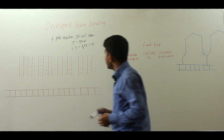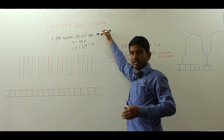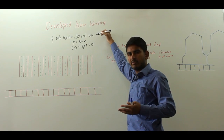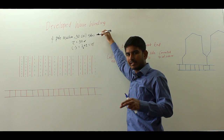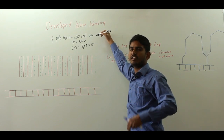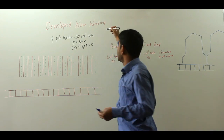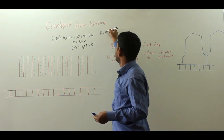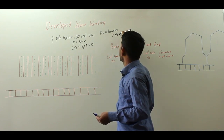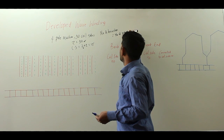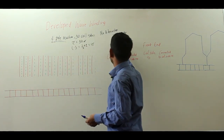Now, about the number of brushes: generally for wave winding, only two sets of brushes are enough to collect current. But for satisfactory performance of commutation, the number of brushes is taken equal to the number of poles. As we are considering a 4-pole machine, your brushes will simply be equal to four.